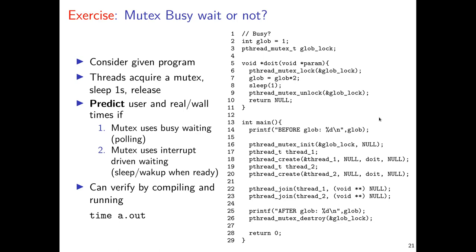The main process waits for both threads to complete, and both threads at some point sleep for one second. So I'd expect the total wall time to be about two seconds: the main process starts up both threads nearly instantaneously, thread one locks the mutex, sleeps for a second, then finishes — and while it sleeps, the other thread waits on the lock. When the second thread gets it, it also sleeps for a second, giving a two-second runtime.